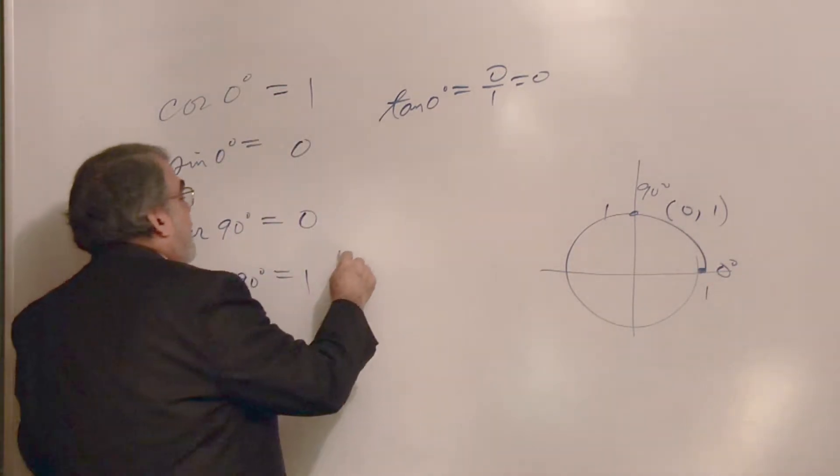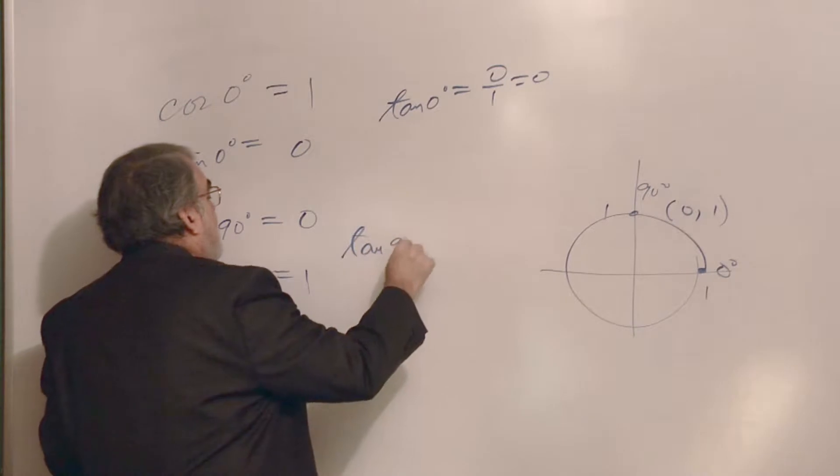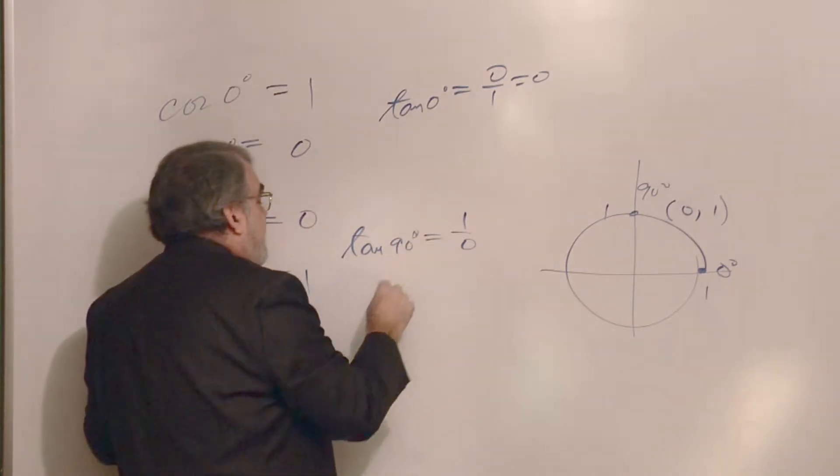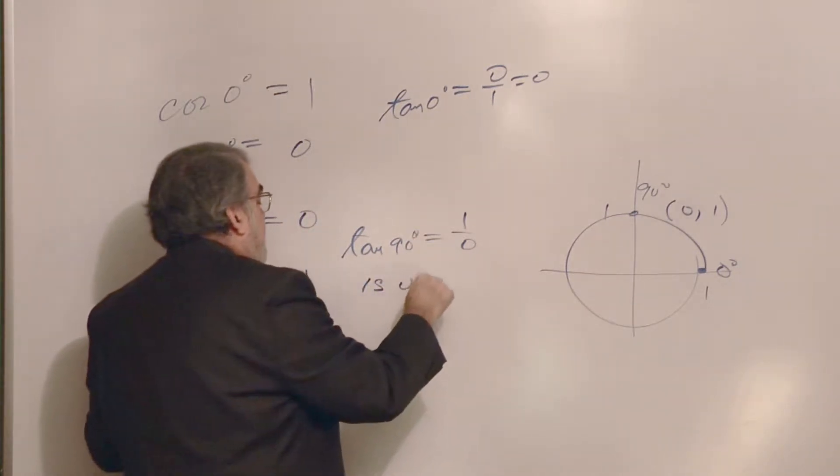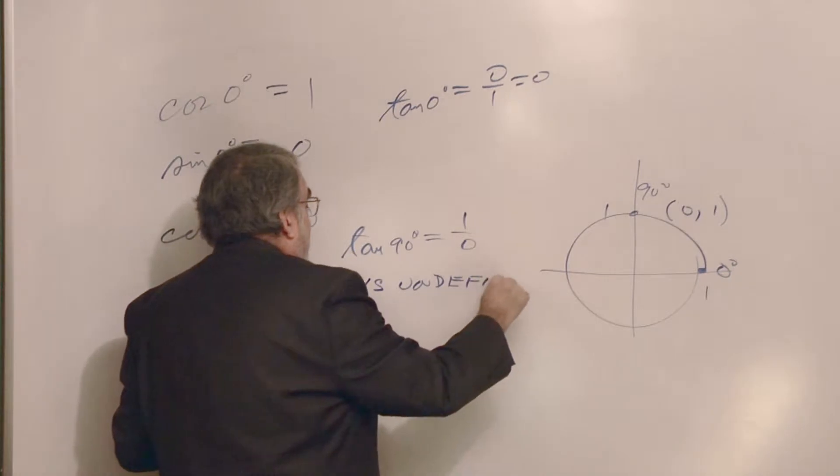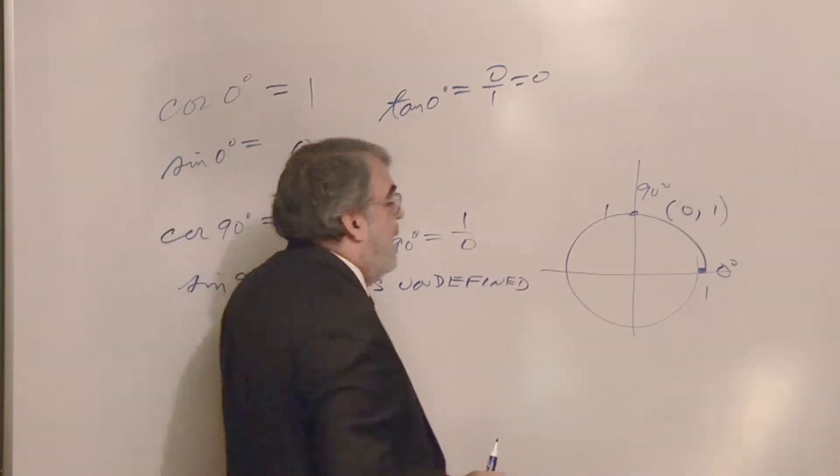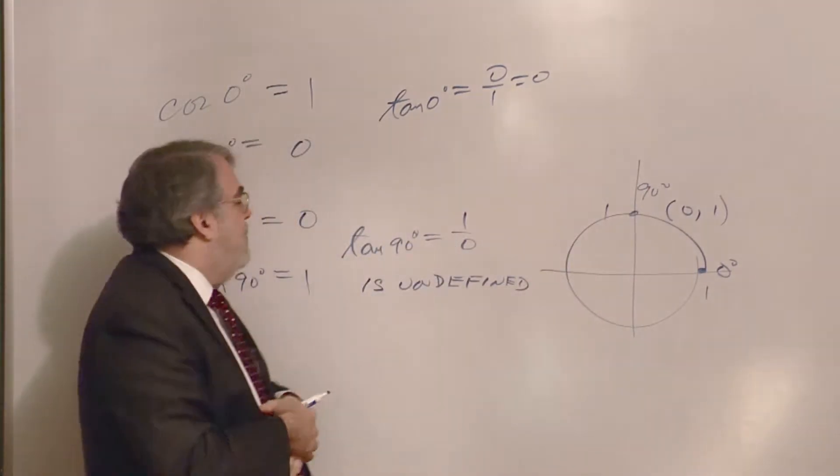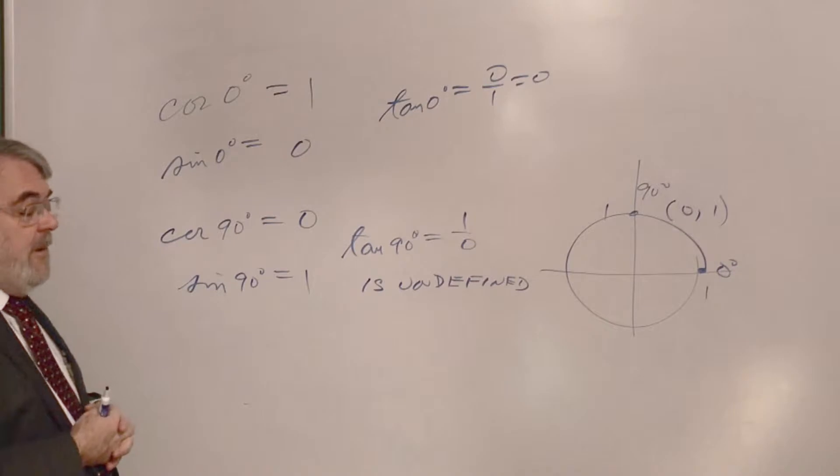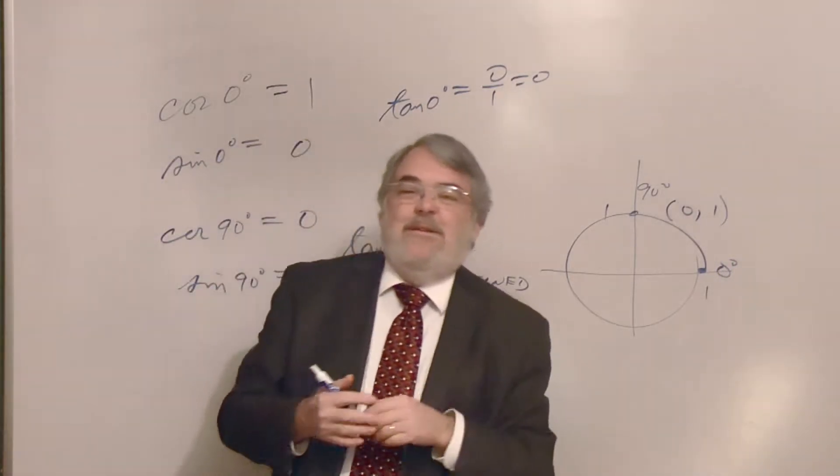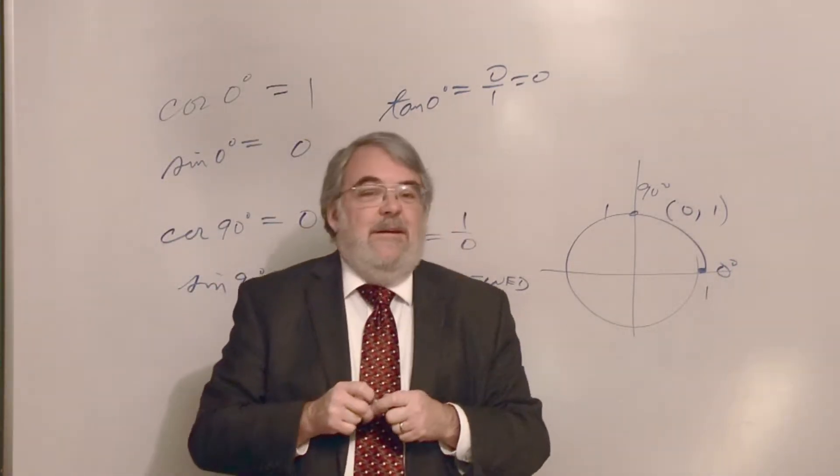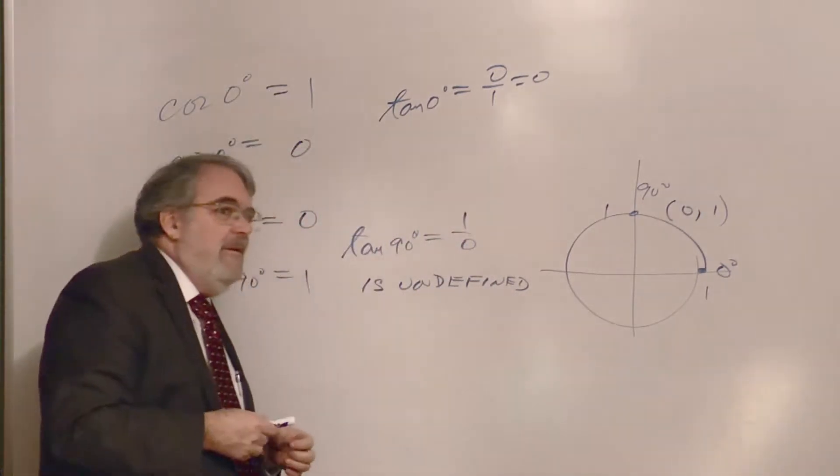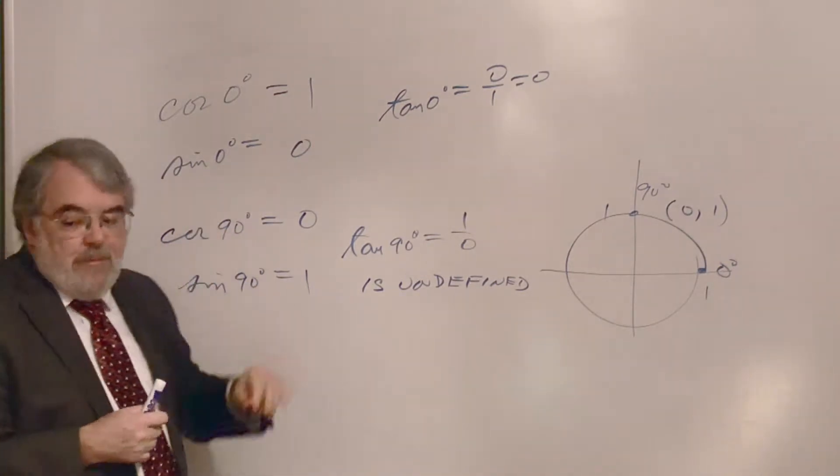However, when you go to tangent 90 degrees, sine over cosine would be one divided by zero, and is undefined, because we can't divide by zero, can we? And that matches what you've probably learned about vertical lines. Vertical lines have undefined slope, so you can't put a number on it. Alright. So, if you punch in tangent 90 degrees on a calculator, you're going to get an error message. It doesn't like it, and it shouldn't, because you can't divide by zero. Alright. So, it's important to know that.